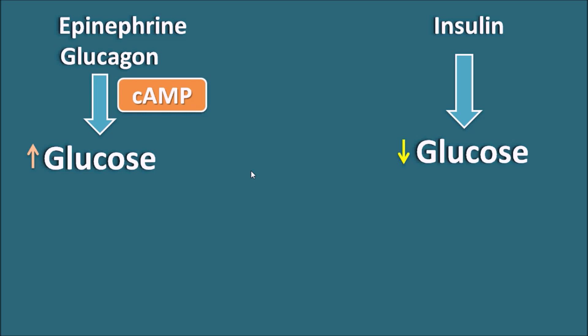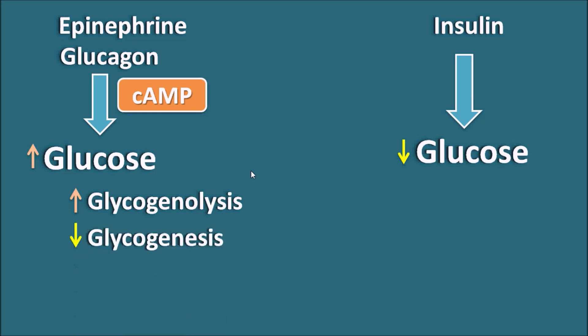For example, cyclic AMP can cause increased glycogenolysis, that is the breakdown of glycogen to produce glucose. And it can inhibit glycogenesis, that is the synthesis of glycogen from glucose. With these two effects, the glucose levels are increased.